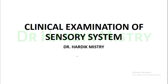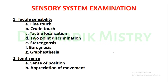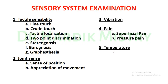Hello everyone. Today we begin with the clinical examination of the sensory system. We are going to do the sensory system examination in five different parts: tactile sensibility, joint sense, vibration sense, pain sensation, and temperature sensation. Inside tactile sensibility we are going to do fine touch, crude touch, tactile localization, two-point discrimination, stereognosis, barognosis, and graphesthesia. Inside joint sense we are going to do the sense of position and appreciation of movement. Inside pain sensation we are going to test superficial pain and pressure pain.